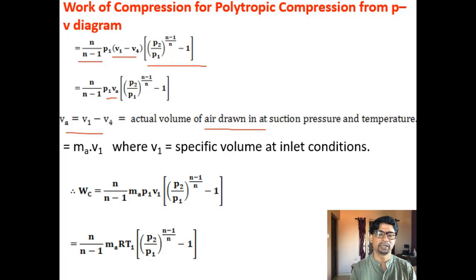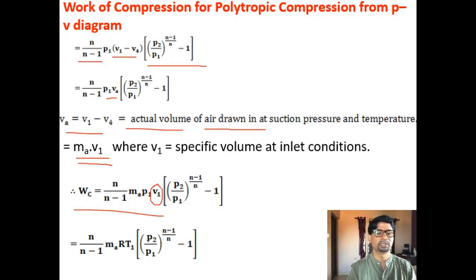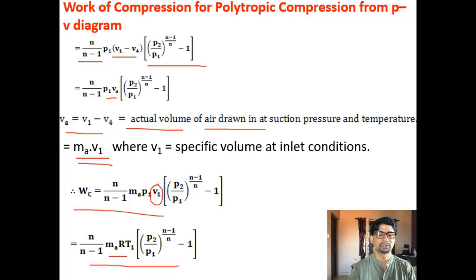So from 3 to 4 the compressed air expands, and from 4 to 1 actual suction begins. V_A can also be written as m_A times small v1 — mass times specific volume. So the work of compression is WC = N/(N−1) times m_A times P1v1 times [(P2/P1)^((N−1)/N) minus 1], where v1 is specific volume at inlet. Since P1v1 equals RT1, an equivalent expression is WC = N/(N−1) times m_A times RT1 times [(P2/P1)^((N−1)/N) minus 1]. If m_A is the mass flow rate in kg/s, this gives the power input to the compressor.